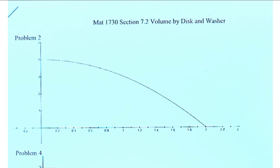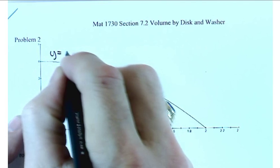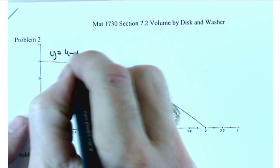Let's find the volume of the solid of revolution by the disk method for problem number two. The equation in problem two is y equals 4 minus x squared.